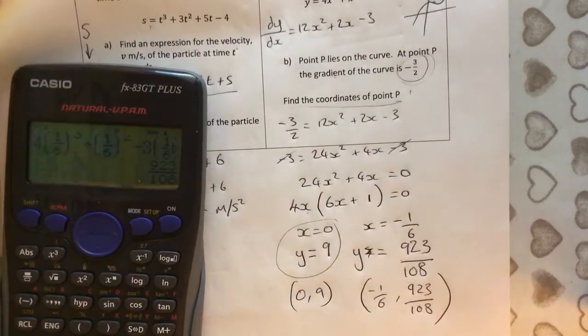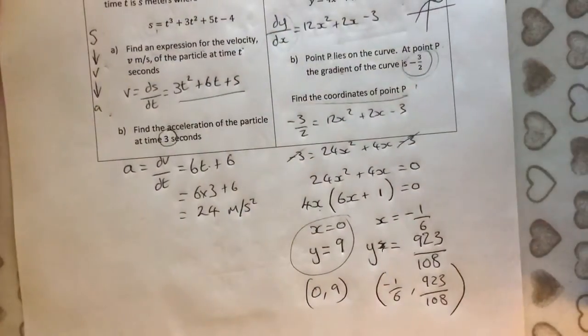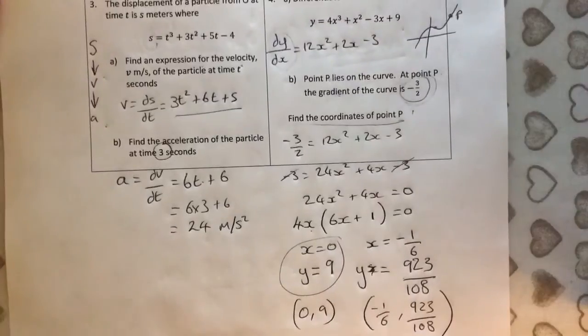So, two coordinates, possible positions of point P. Hope you got those answers and if you didn't, I hope you can see how we're supposed to get them.